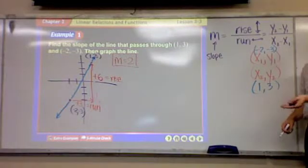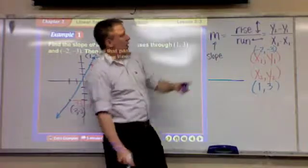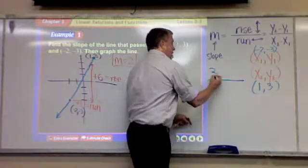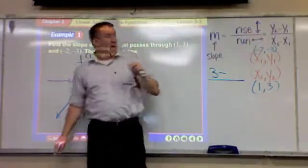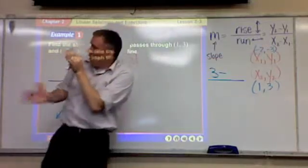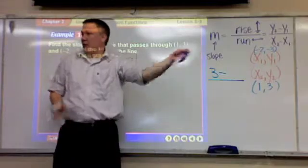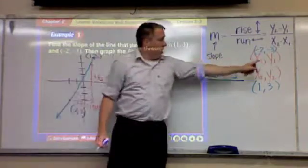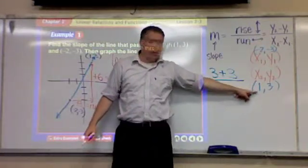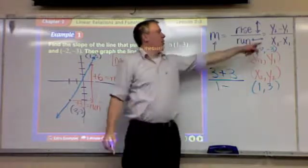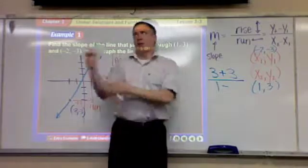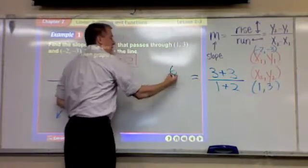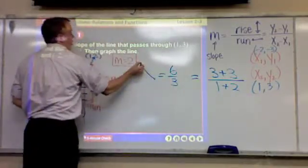So let's actually do it — plug it in. What is y₂? The second y coordinate — it's three. Minus y₁, which is negative three. So you've got three minus negative three, which is three plus three, which is six. Then x₂, the second x coordinate, is one. Minus x₁, the first x coordinate, which is negative two. So one minus negative two is one plus two, which is three. Six over three equals two.